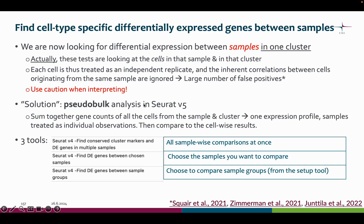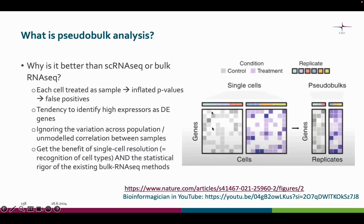So it returns summed counts for each identity class. In this nice figure from this Nature publication, we can see what the single cell data looks like and what happens in the pseudobulk analysis.